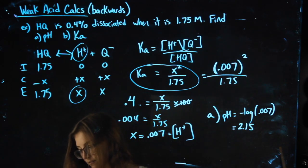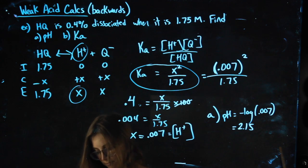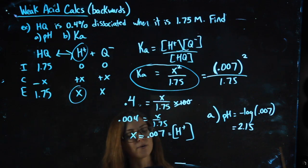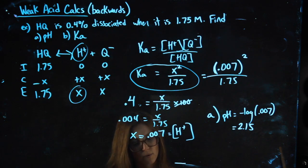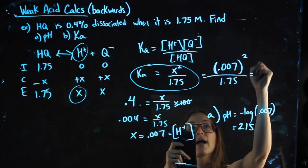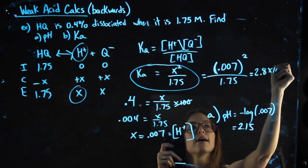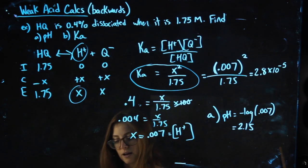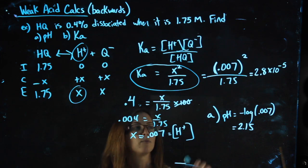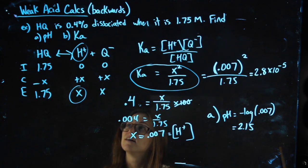Anyways, squaring this, dividing by 1.75, I get a KA value of 2.8... .007, because I used the value of my calculator from before, squared divided by 1.75. There we go. I'm putting mine in scientific notation. It's okay if yours isn't. I get 2.8 times 10 to the negative 5, which feels right for a KA value. If you look at that chart, we tend to be times 10 to the negative something. Okay?